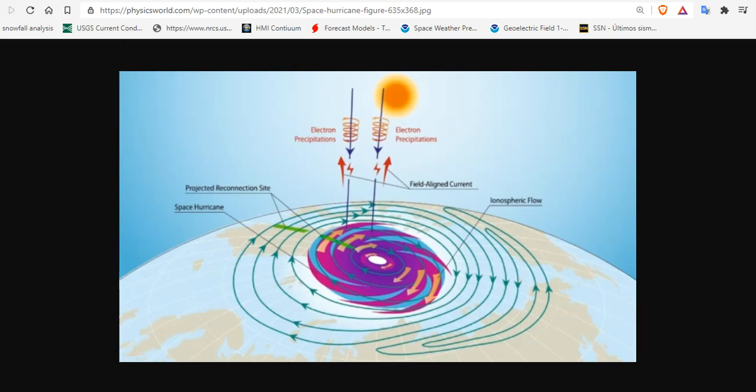Plasma and magnetic fields in the atmosphere of planets exist through the universe, so the findings suggest space hurricanes should be a widespread phenomena.